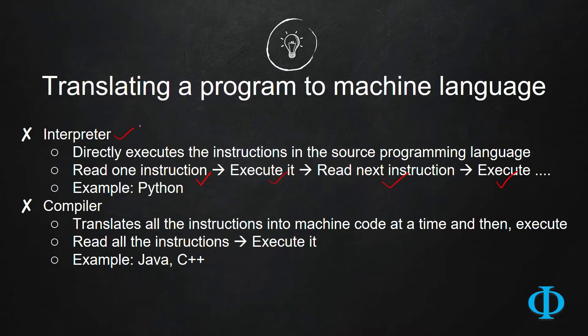The second type of translation is compilation. The software that does it is called a compiler. This compiler basically reads the entire program - all the instructions you wrote in a program - at a time, then converts it to machine language and executes it.